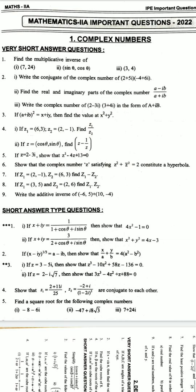If x minus iy whole power 1 by 3 equals a minus ib, then show that x by a plus y by b equals 4 into a square minus b square. If z equals 3 minus 5i, then show that z cube minus 10z square plus 58z minus 136 equals 0. If z equals 2 minus i root 7, then show that 3z cube minus 4z square plus z plus 88 equals 0.